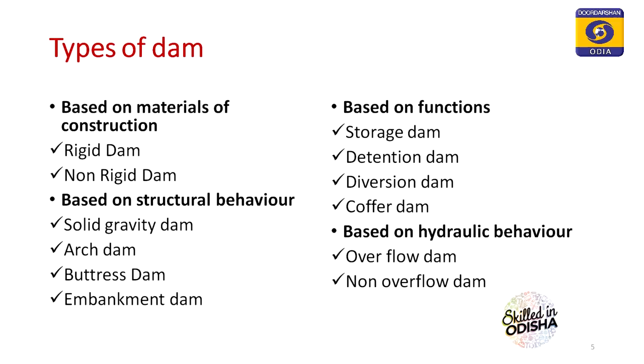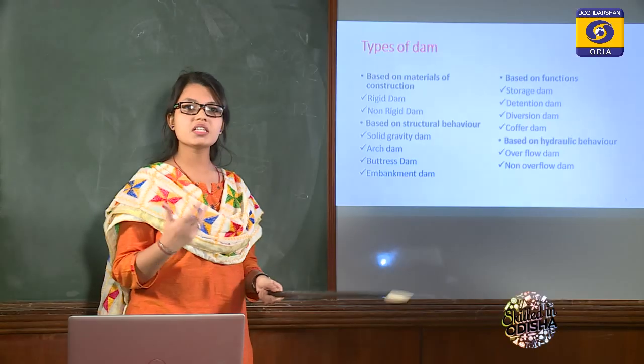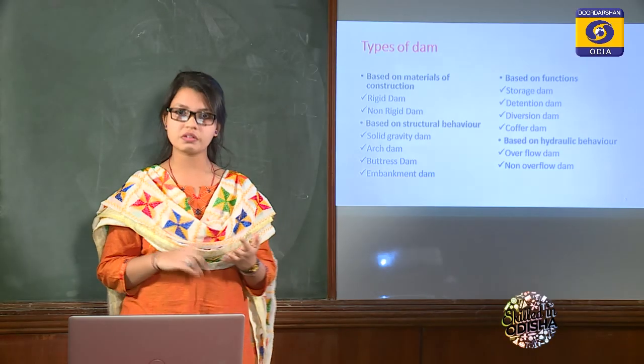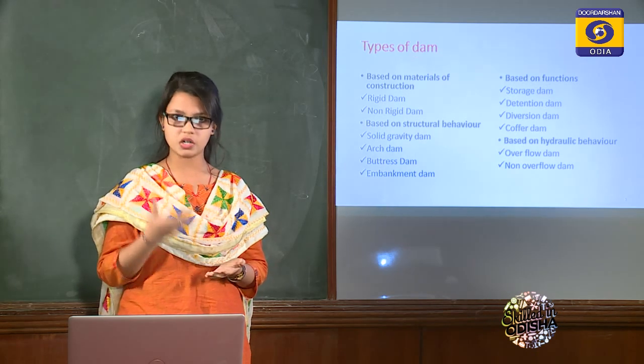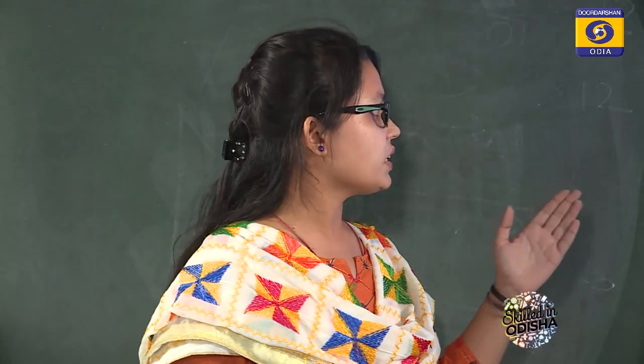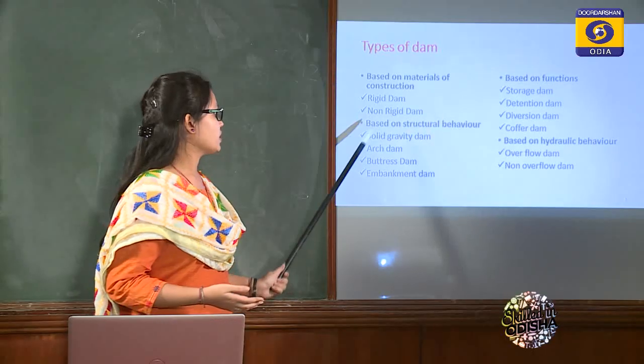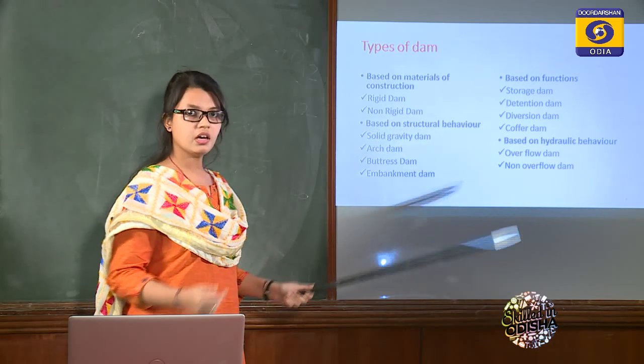Based on material of construction: the first type is the rigid dam, which is made up of rigid materials like concrete, masonry — that is stones or bricks connected by mortar — or steel or timber. Non-rigid dams are those constructed using non-rigid, not very stiff materials, like earth, rocks, and gravel.